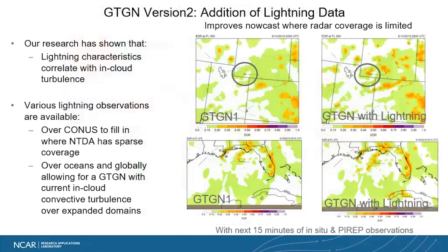Moving ahead, we are looking into additional adaptations and enhancements to GDGN. On the research side, we are looking at adding lightning data as well as satellite data. Lightning information has in the past shown to be quite useful and to correlate with in-cloud turbulence. Storm electrification has been shown to correlate well with storm kinematics. A variety of past research has given us a platform to develop capabilities to infer turbulence from lightning data, which may prove valuable where radar data is not available.